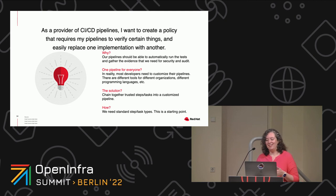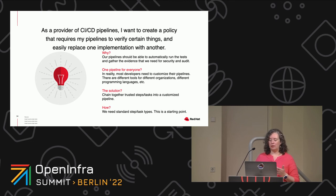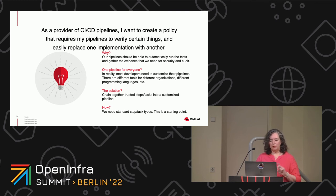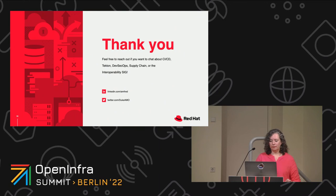Our pipelines need to be able to automatically run these tests and gather the evidence that the right checks are happening for security and audit purposes. Also developers need to customize their pipelines — maybe when you're first developing something it's not going to pass all 30 checks, but you need to at least get the unit tests working. By the time you get to production you have to have passed all the checks, so you need to be able to turn things on and off and chain these together into a customized pipeline. Standard step and task types is a starting point for all that work. Thank you — feel free to reach out if you want to chat.